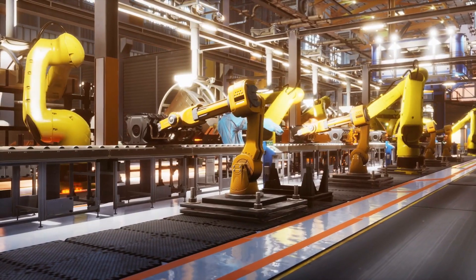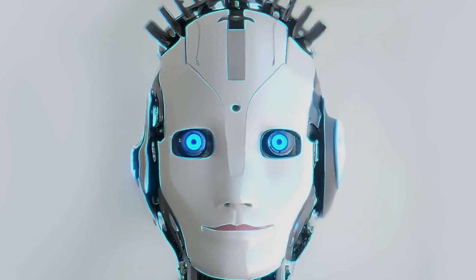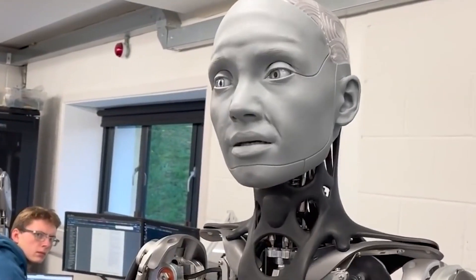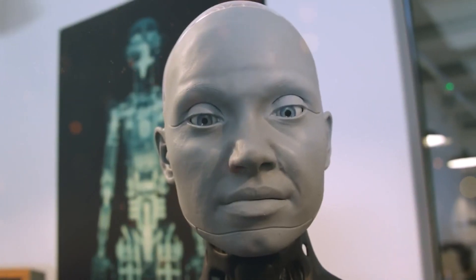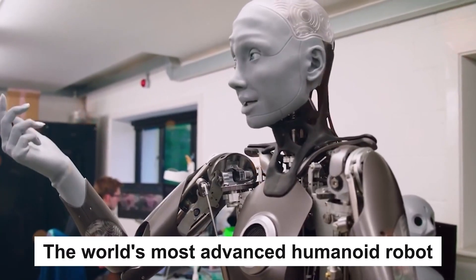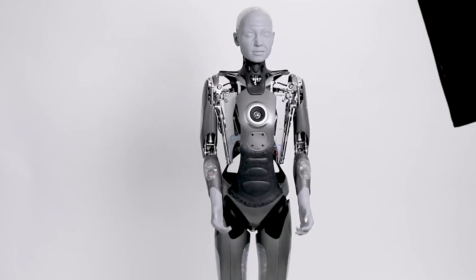In a world where technology is advancing at an unprecedented pace, a new frontier has been reached in the realm of robotics. Meet Emeka, the world's most advanced humanoid robot, a creation that blurs the line between machine and human.